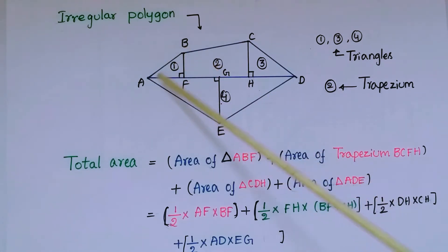So that is equal to 1/2 times AF times BF - this is height times base. And again this trapezium area is equal to 1/2 times FH, this is height, and these two are parallel sides so BF plus CH - sum of parallel sides into height.